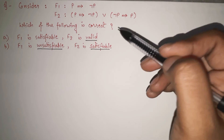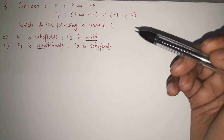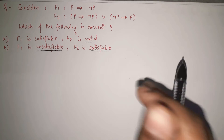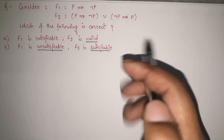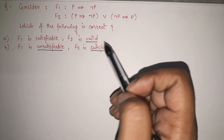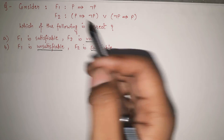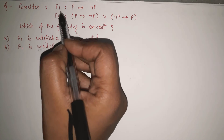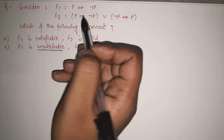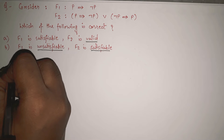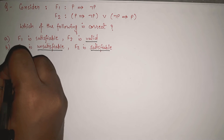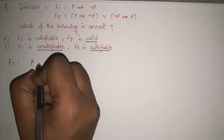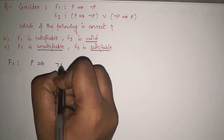These are the main three points you should know for solving this question. Now let's start to solve it. We already know what these three words mean. First of all, let's simplify F1 and F2. What is F1? F1 is given as P implies negation of P. Let's write negation of P as P dash.